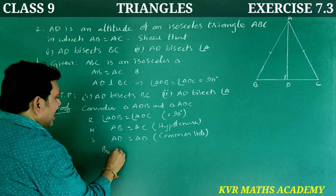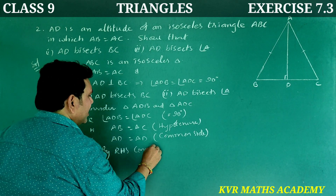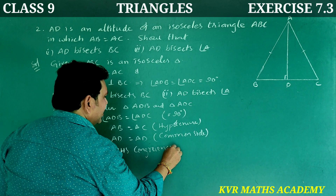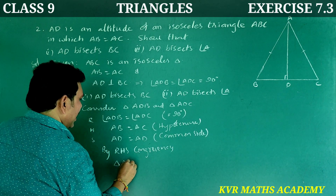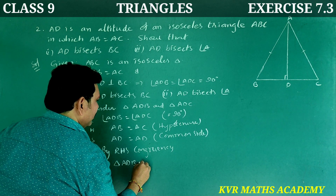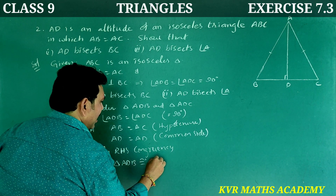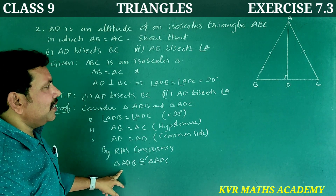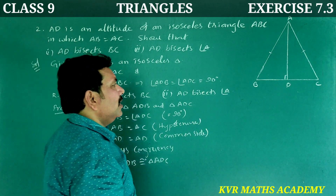By RHS congruency, triangle ADB is congruent to triangle ADC.